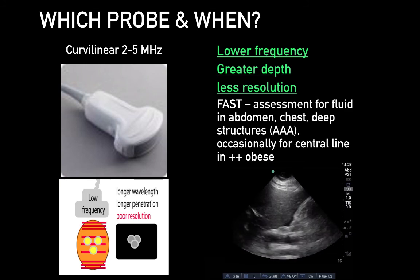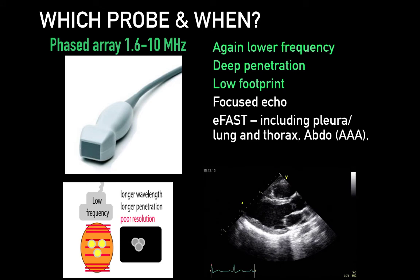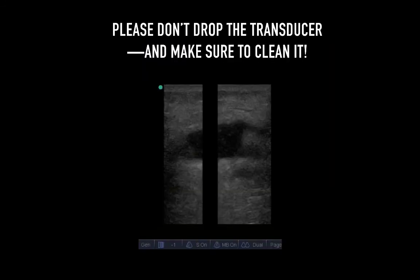Remember, this probe is set to deep and often needs adjustment if viewing more superficial structures. The phased array probe is around 1.6 to 2 to 10 MHz, covering a full breadth of frequencies and wavelengths. It electronically sequences activation of the transducer crystal elements, and by controlling delays between pulses, beams of various angles and focal distances can be produced for inspection of complex and moving structures. The smaller footprint allows one to get in between the ribs — as one colleague says, it's like a virtual rib spreader. This probe is used for echocardiography and thoracic imaging but can also be applied to abdominal and pelvic equally.